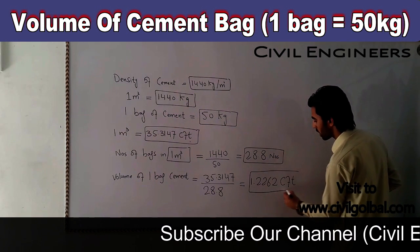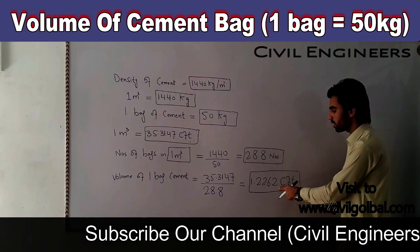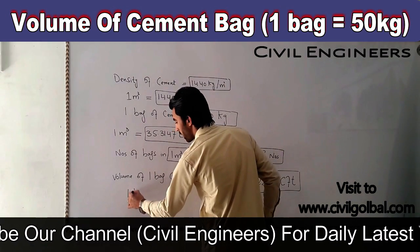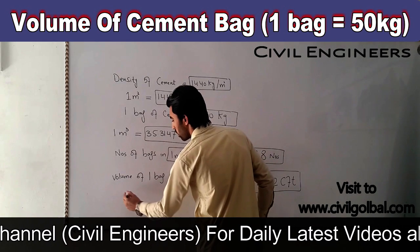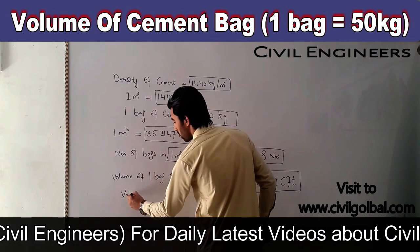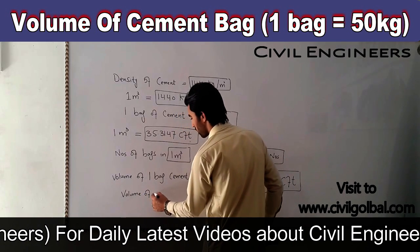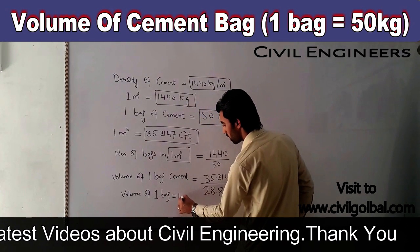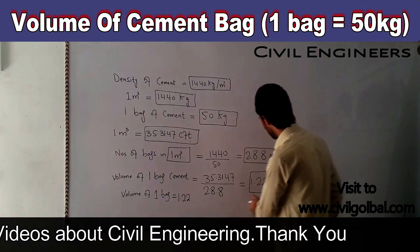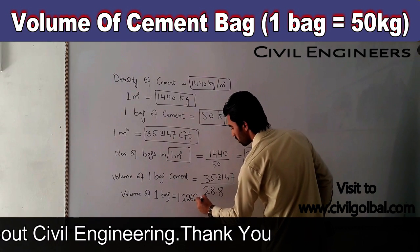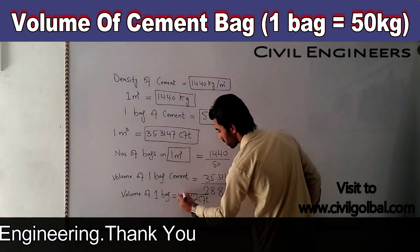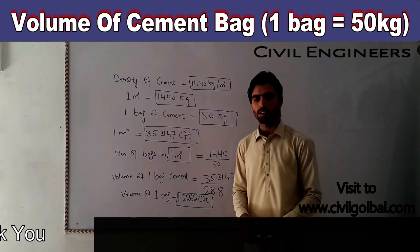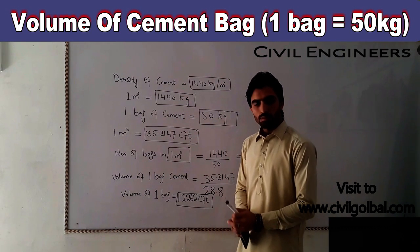So the answer is 1.2262 CFT — that is the volume of one bag of cement. Thank you, all the best.